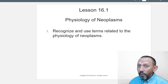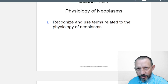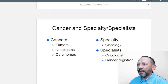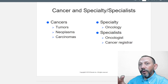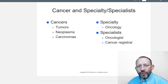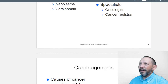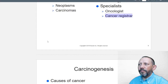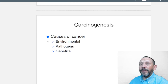Chapter 16.1 — physiology of neoplasms. Neoplasm means 'new growth.' We need to recognize terms related to physiology. Cancers usually show up as a tumor — the growth — with suffixes like '-oma,' or as neoplasms meaning new growth, or carcinomas which are cancerous growths. An oncologist is the specialist in oncology, and you also have cancer registrars who do research on cancer and try to find its causes.